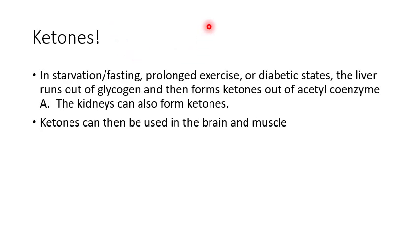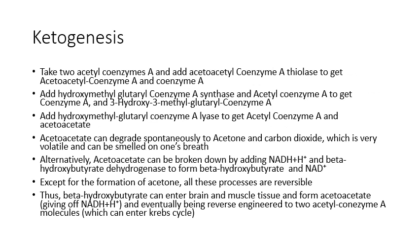Let's talk about ketones - our emergency backup energy source for when we are starving, deliberately fasting, in a prolonged exercise situation, or in a severe diabetic state. What happens is the liver runs out of glycogen, can't make any more glucose, and then it starts forming ketones. The way it makes ketones is it takes acetyl coenzyme A and converts it into a ketone. The kidneys can also form ketones, and ketones can be used in the brain and muscle as an energy source. We're going to go into detail about ketogenesis - how ketones are made.